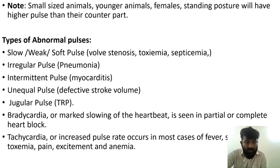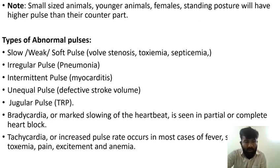Bradycardia, or marked slowing of the heartbeat, is seen in partial or complete heart block. Tachycardia, or increased pulse rate, occurs in most cases of fever, toxemia, pain, excitement, and anemia.